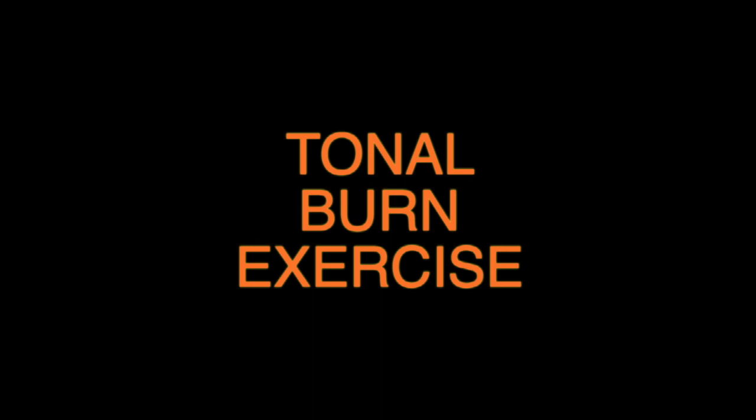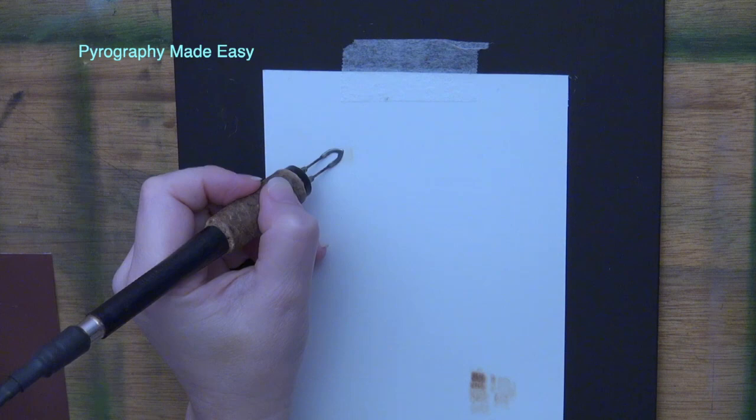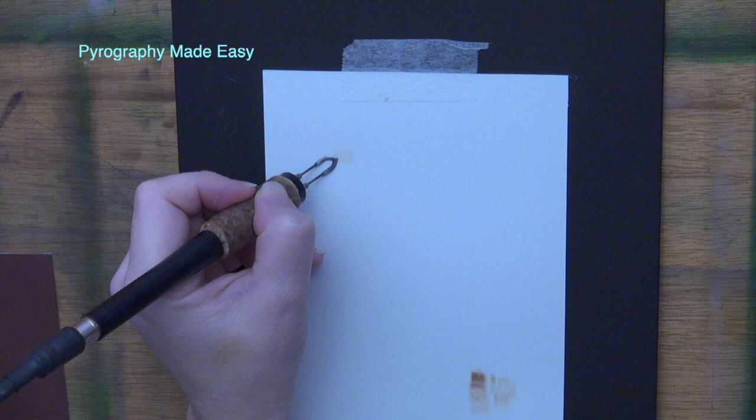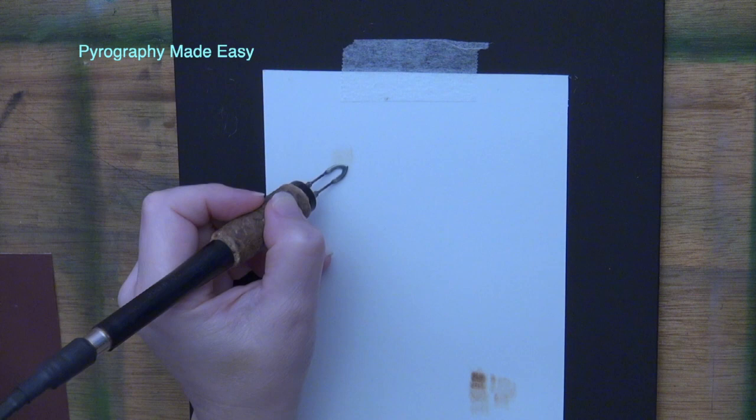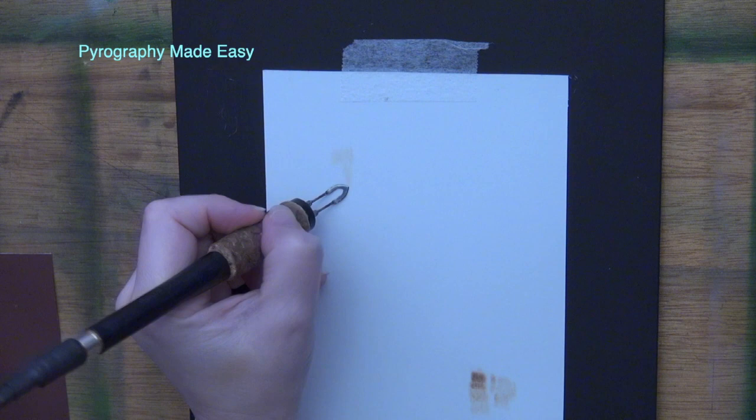Let's start with the tonal burn exercise. Use the shader of your choice and burn in a patch of really pale tan. Then burn in another patch of tan color but make it a shade or two darker than the first one. I am using uniform strokes for this and I have my burner set just high enough to get a burn result.